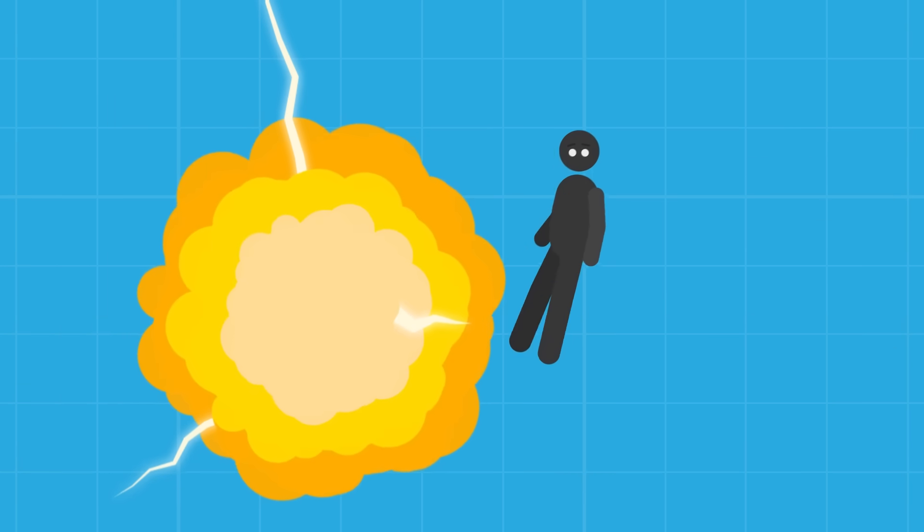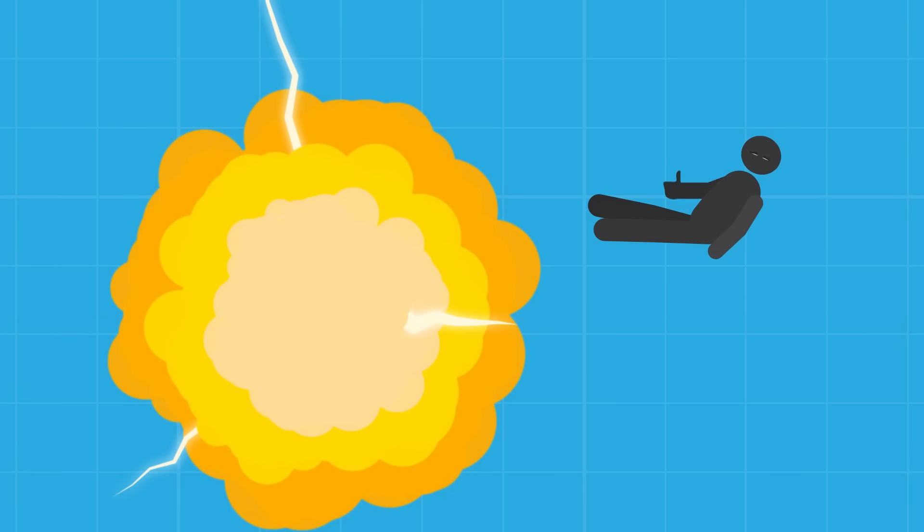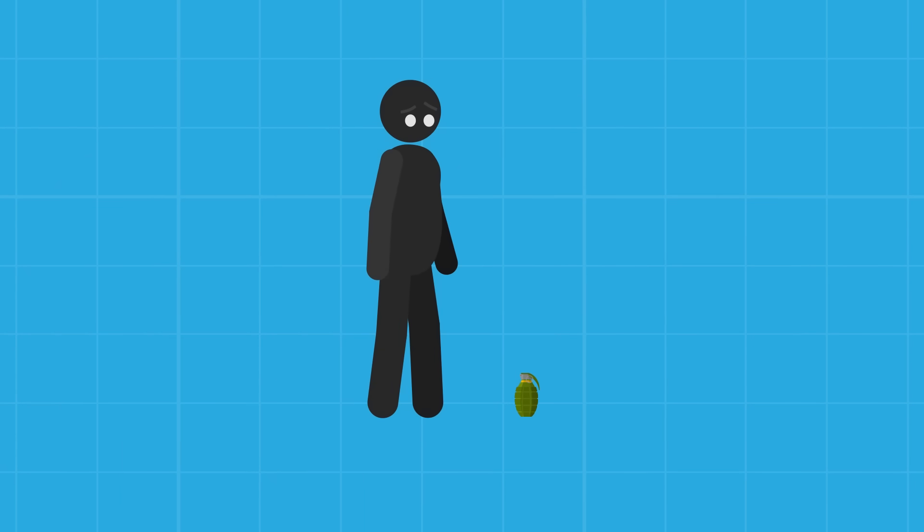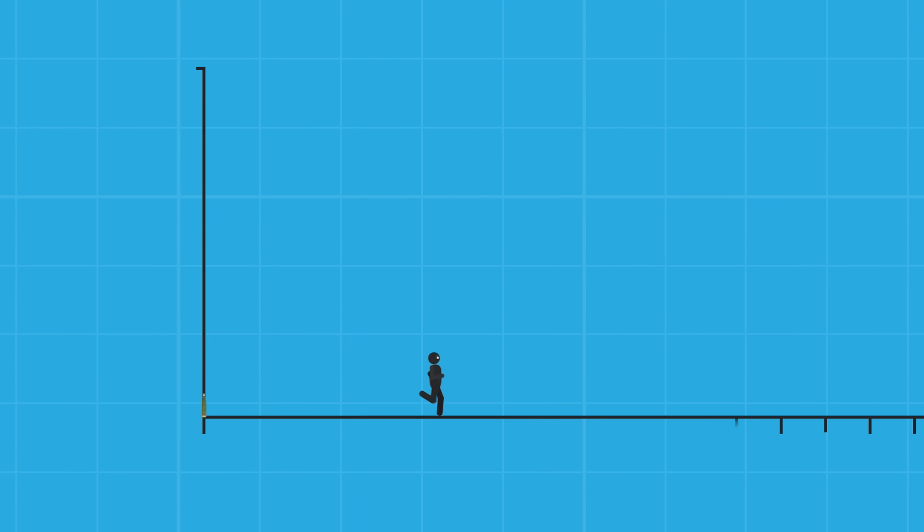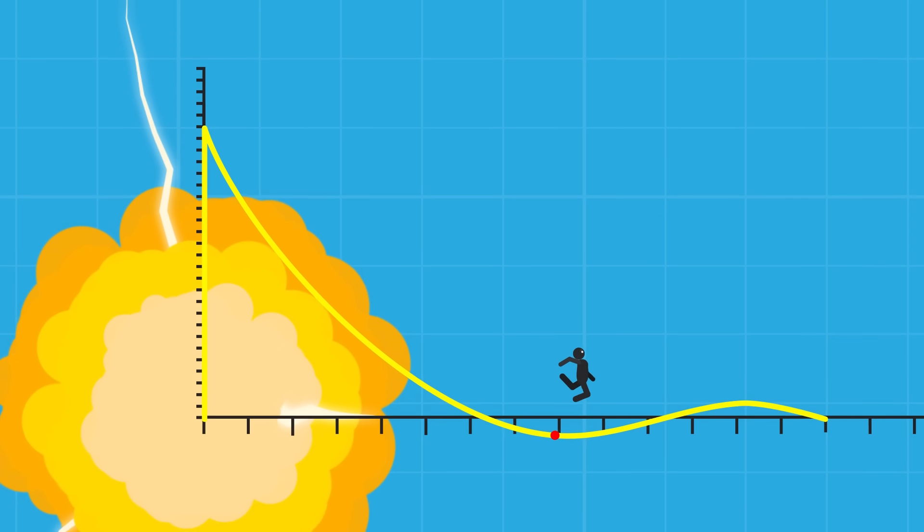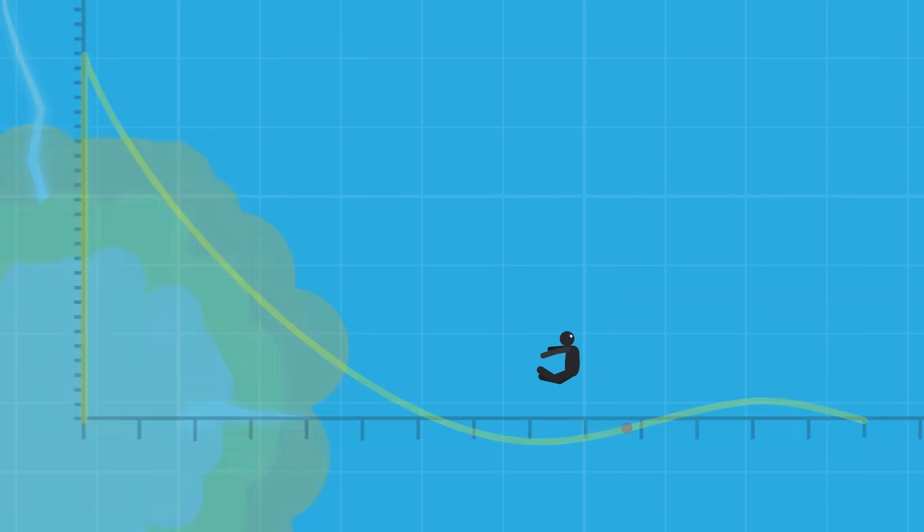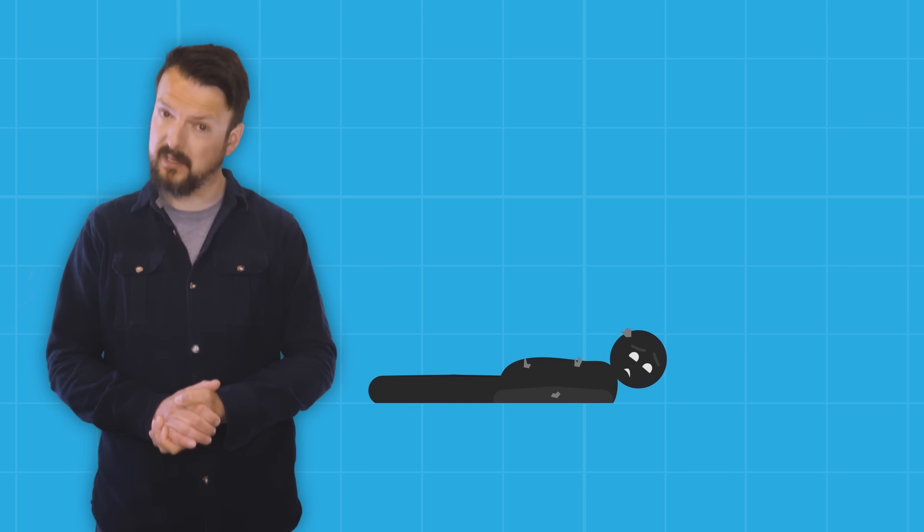So, do explosions throw you in the air? Well, maybe. They usually don't, but they definitely can. Depends on the explosion, how big it is, and how close you are to it. But, while it is possible for an explosion to throw a person into the air, as a general rule, that person is not going to get right back up and dust themselves off like all the best action movie stars. They'd be dead.